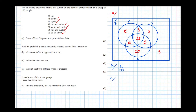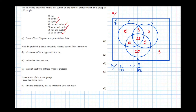Part C: swims but does not run. So we're looking for all the entries that are in swimming but don't overlap with running. That's those two regions: 3 and 5. So that's 8 out of 100, which simplifies — dividing by four — to 2 over 25.